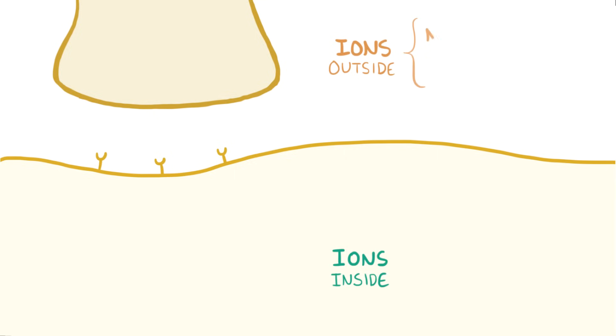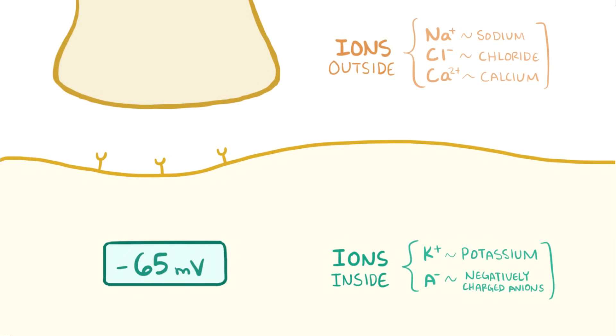Generally speaking, there are more Na+, or sodium ions, Cl- or chloride ions, and Ca2+, or calcium ions on the outside of the cell, and more K+, or potassium ion, and A-, which we just use for negatively charged anions, on the inside of the cell. Overall the distribution of these ions gives the cell a net negative charge of close to negative 65 millivolts relative to the outside environment, and this is the neuron's resting membrane potential.